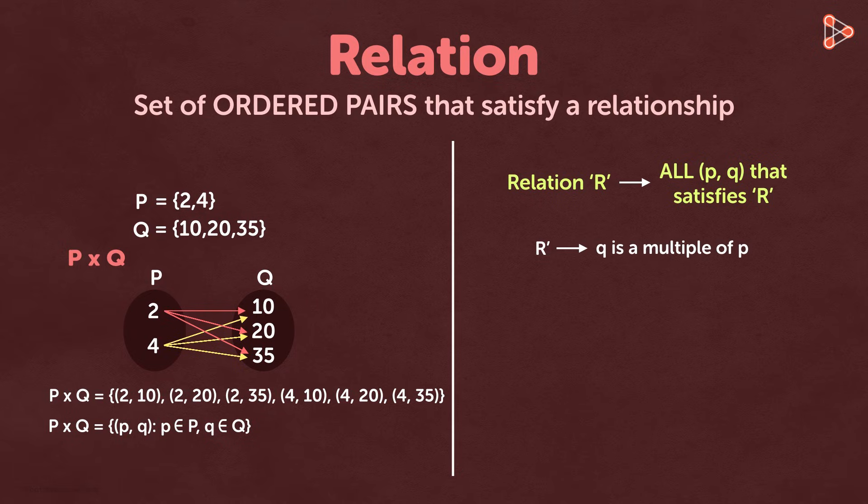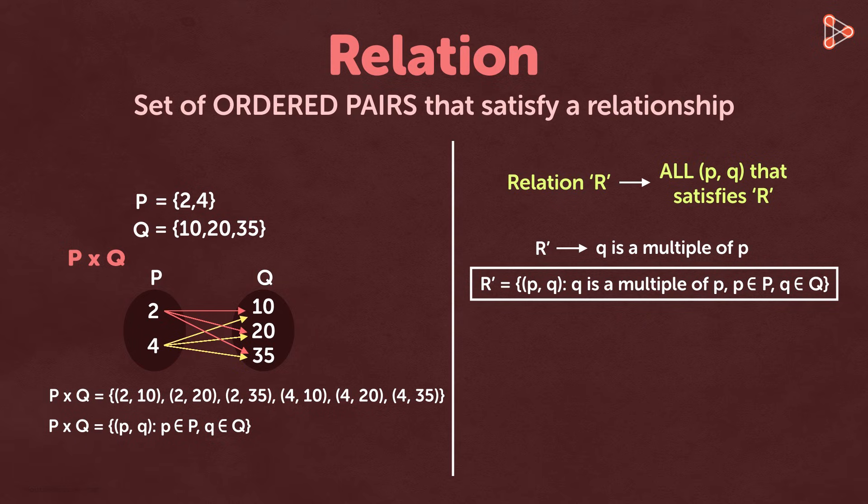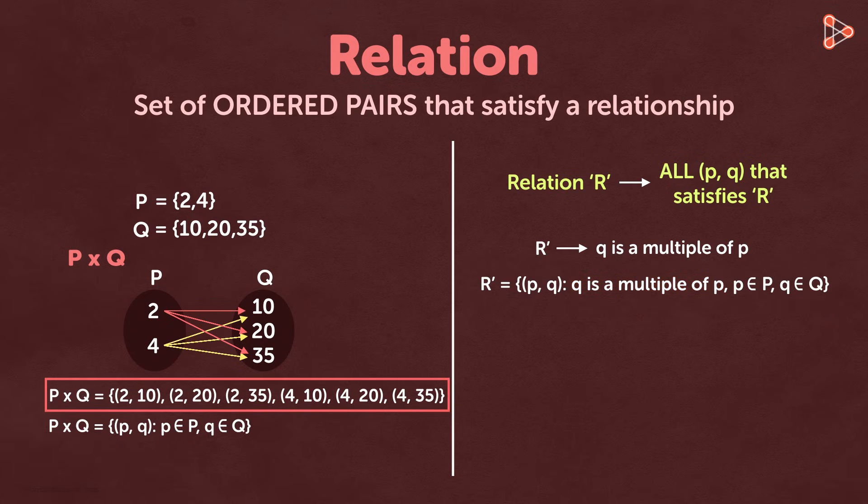So we can say that relation R dash gives us a set of all ordered pairs P comma Q where Q is the multiple of P. Every ordered pair in the set R dash satisfies the relation R dash. This is the set builder method to represent R dash. Please note that Q has to be a multiple of P here.